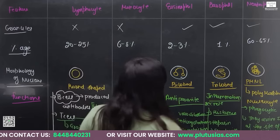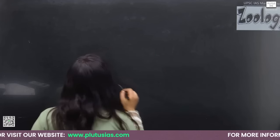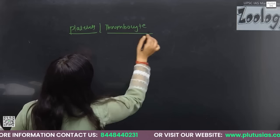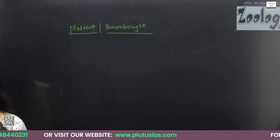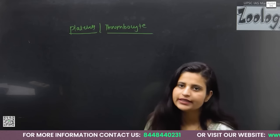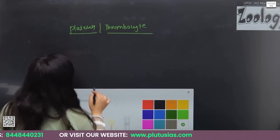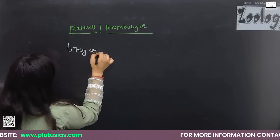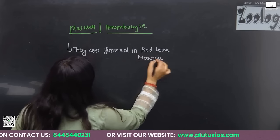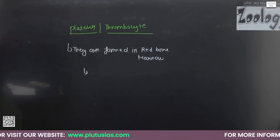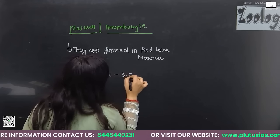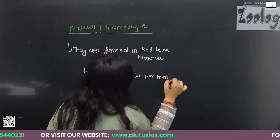The next topic is platelets, also known as thrombocytes — 'thrombo' meaning coagulation, as they are responsible for coagulation. Like all blood cells, they are formed in the red bone marrow. The normal platelet count is 1.5 lakh to 3.5 lakh per mm³ of blood.